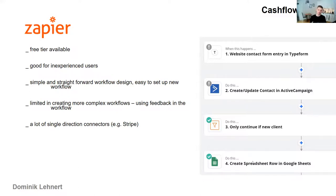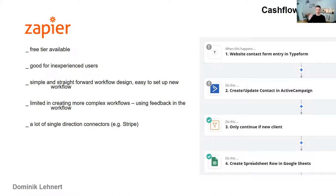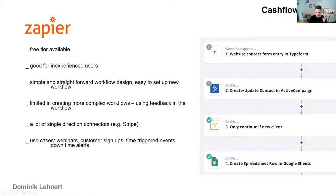Also with Zapier's connectors, I found there are a lot of single-direction connectors. One example is Stripe — a platform to run credit card payments. With the Stripe connector in Zapier it is single-direction, meaning you can get events from Stripe — if someone runs a payment you can get that information — but you can't send information back. So as of the making of this video, you can't actually trigger a payment into Stripe from Zapier. That's something to be careful about.